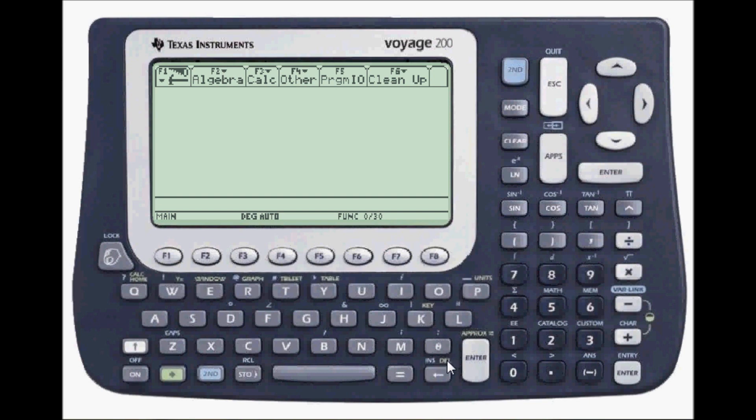I'm going to go to the home app. Here you can do basic calculations such as cosine of 90 degrees. Press enter, zero.